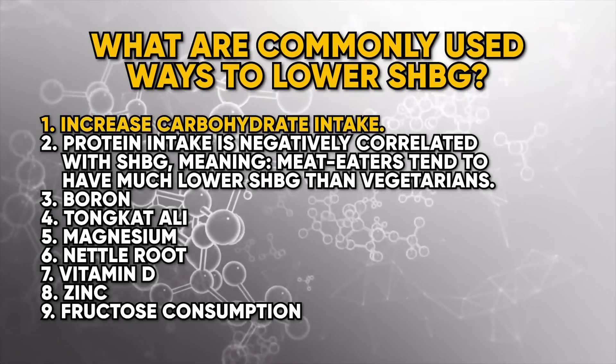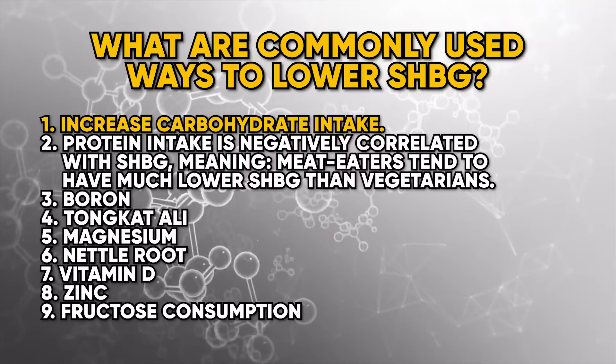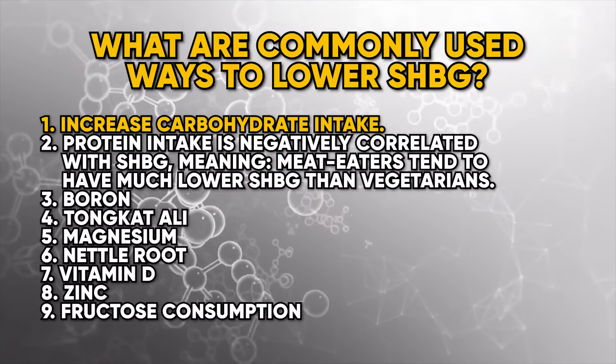What are the commonly used ways for men to lower SHBG? Here are some strategies often recommended. Number one is increasing carbohydrate intake. A number of men who go on a keto or carnivore diet, eliminating carbohydrates, actually notice in their blood work that it raises sex hormone binding globulin. This is why I'm a big proponent of increasing carbohydrates significantly if we're trying to maximize free testosterone levels and availability in the body.